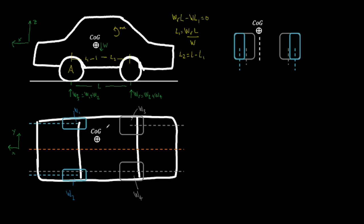This car has skinnier tyres on the front than on the back — big fats on the rear. One of the measurements we need is the track width, which is the distance between the centres of the tyres along the axle. Because we've got fatter tyres on the rear, the front track width tf is a bit larger. We can quickly see that the offset y is equal to half of the front track width minus half of the rear track width.